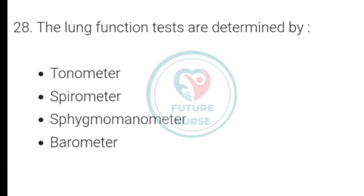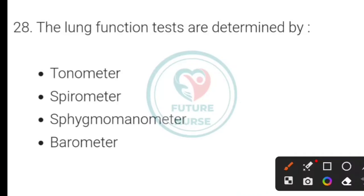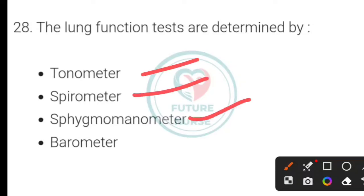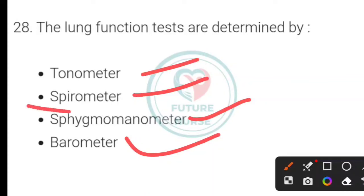The lung function tests are determined by which of the following instruments? Options: tonometer, spirometer, sphygmomanometer, or barometer. The correct option is spirometer, which is used to test lung functions.